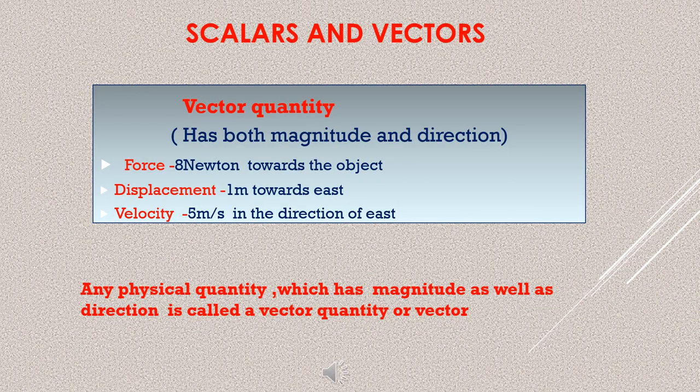Now take the quantity of force. If I say Ramu hit, you will quickly ask where? Because that answer is not complete. If I say Ramu applied force on the box, that answer is complete. Force is a quantity which is complete only with magnitude and direction. Such quantities are called vector quantities.